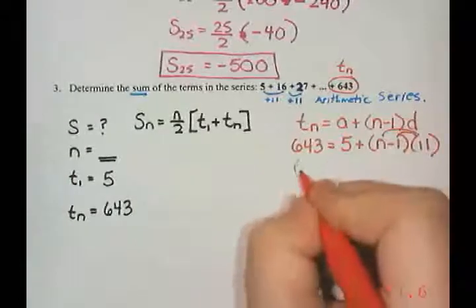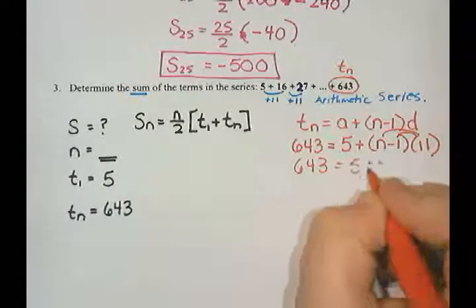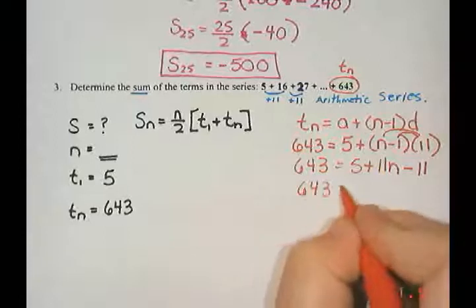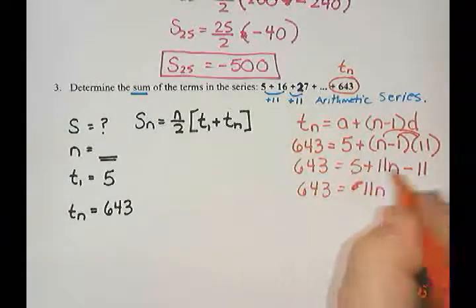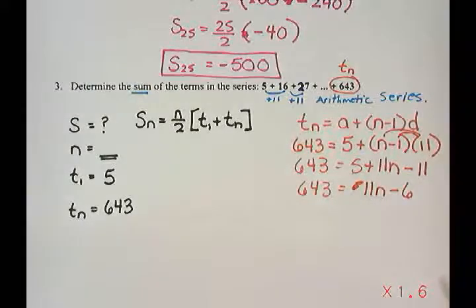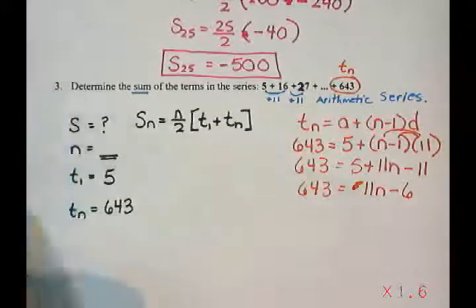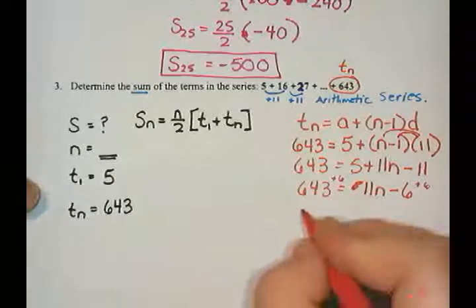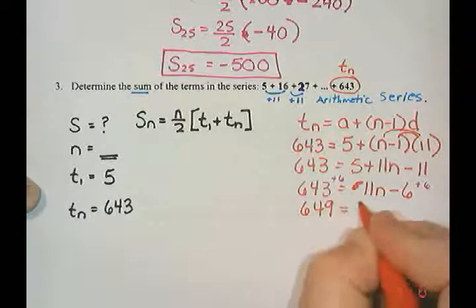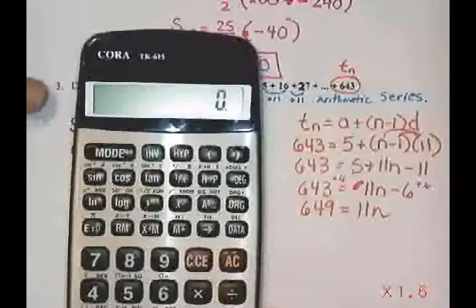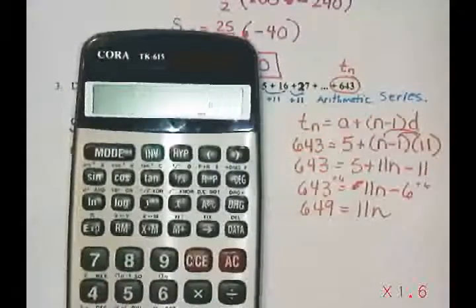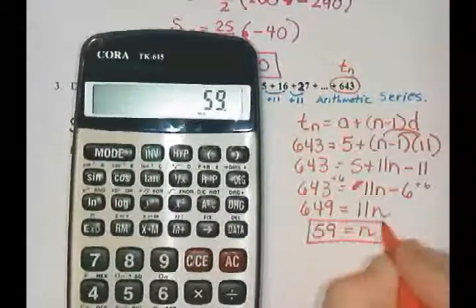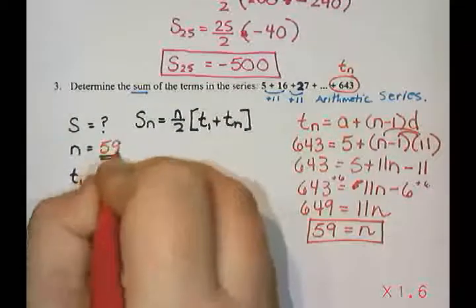So I am going to multiply the 11 into the bracket. So I get 11n take away 11. And then I will collect up the like terms. So I've got 11n, and then 5 take away 11 is negative 6. And then from here, I'm going to add 6 to both sides. Do it grade 9 style here. So 643 plus 6 is 649. And then I will use my calculator for that. So 649 divided by 11 is 59. Which tells me that that is the 59th term. So there are 59 terms in the sequence.